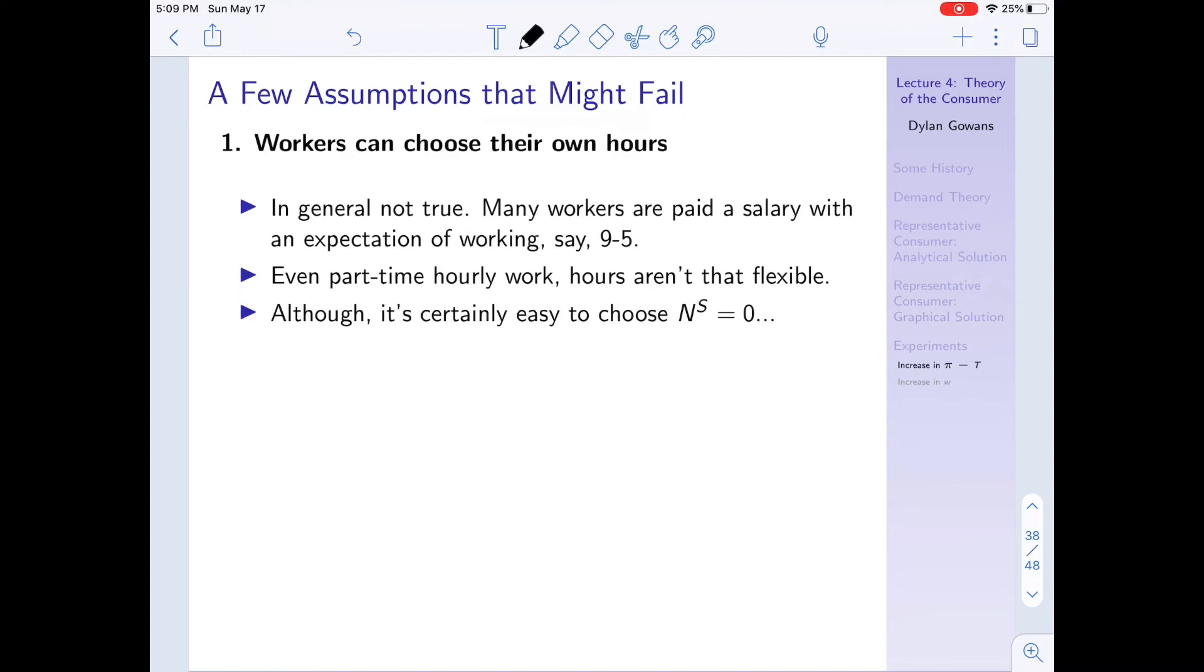Now one thing you could say is certainly you can choose labor supply equals to zero. So I mean, you at least have that choice. So what I mean here is you could always choose to quit your job and to not work at all, so certainly you have that choice. And so thinking about just this assumption, imagine instead what someone's budget constraint would look like in the case where they can't choose their own hours.